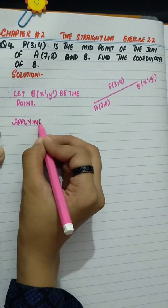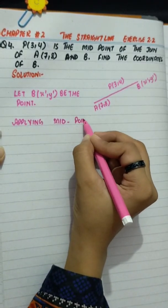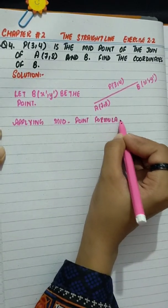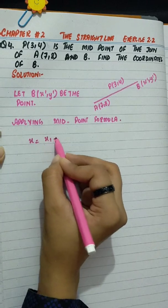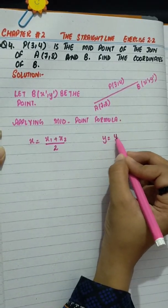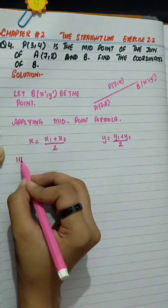Now applying midpoint formula: x equals x1 plus x2 divided by 2, y equals y1 plus y2 divided by 2.